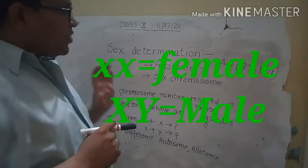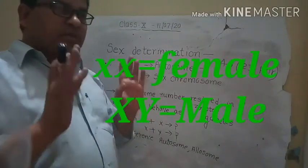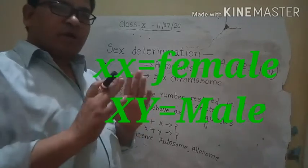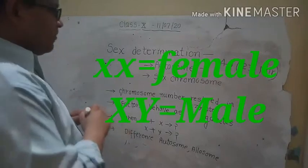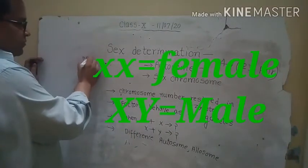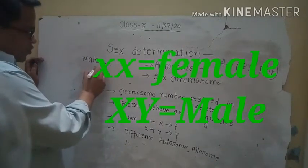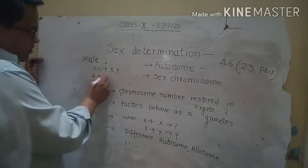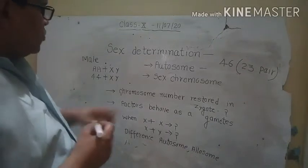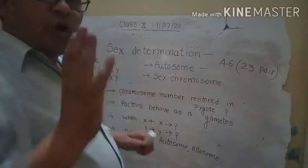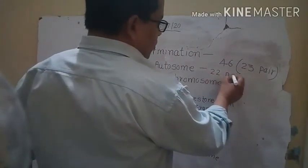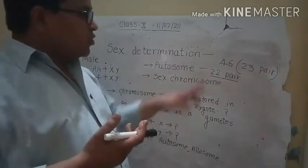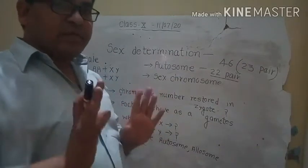Autosomes are those chromosomes which never play a role in the sex determination process. It means autosomes are those chromosomes which will not play any role in sex determination. 22 pairs of chromosomes are present — those are called autosomes, and they will never play a role in the sex determination process.